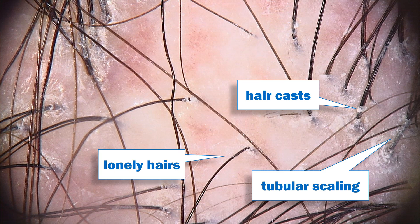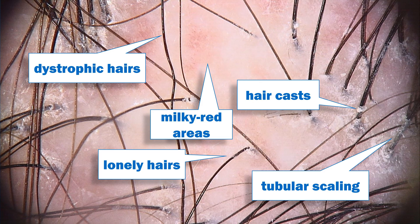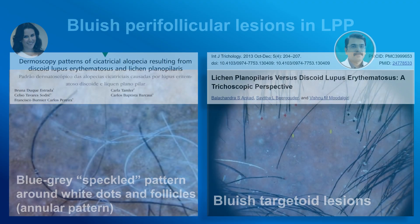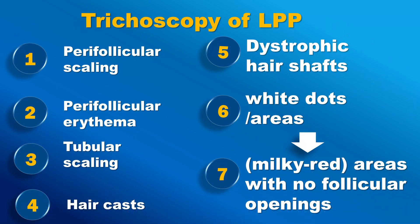Furthermore, we will see some lonely hairs, similar to forms of fibrosing alopecia, and some dystrophic hairs as in other diseases associated with cicatricial alopecia. And finally, as in all diseases associated with scarring of recent onset, there are milky red areas. There may also be bluish perifollicular lesions, mainly found in patients with darker skin phototypes.